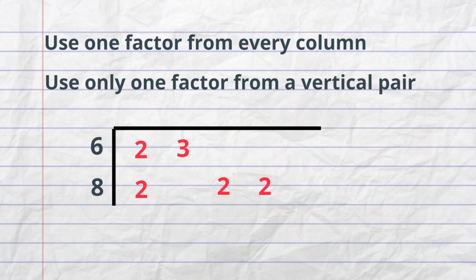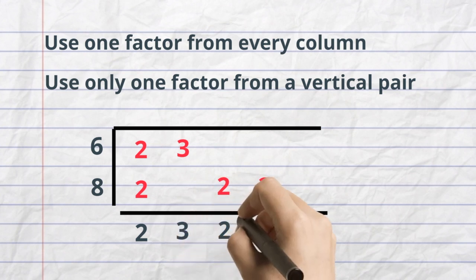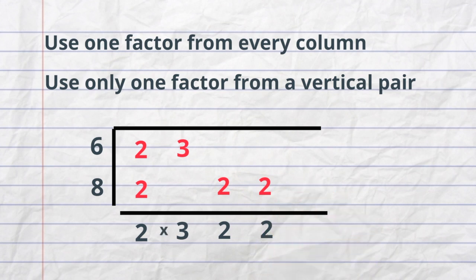So first we have 2 and 2. It's a vertical pair, so I would just write 2. The next column is 3, so I will have 3. Then I will multiply 2 and 2. So I will have 2 times 3 times 2 times 2, and that equals 24. So the least common multiple of 6 and 8 equals 23.